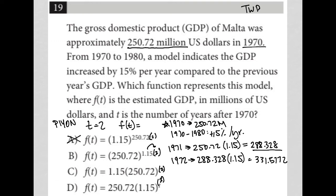250.72 to the 2.3 power. I also do not get 331 there. And then for choice C, 1.15 times 250.72 squared, basically, 250.72 squared times 1.15, also not getting my 331.